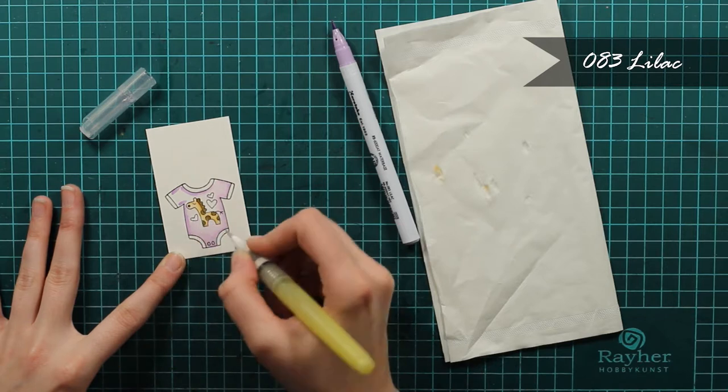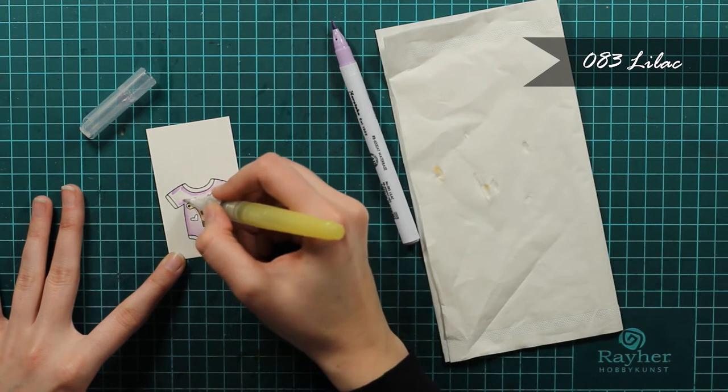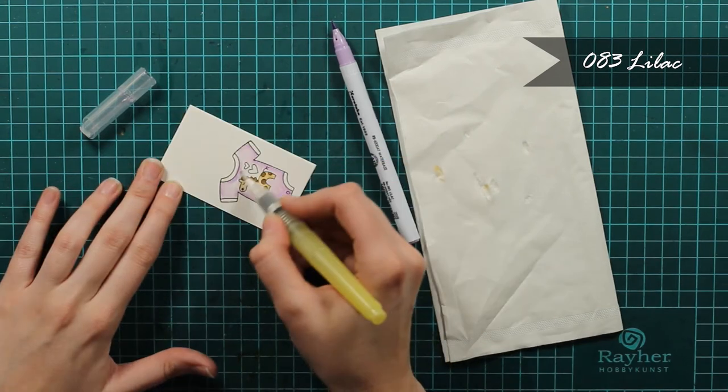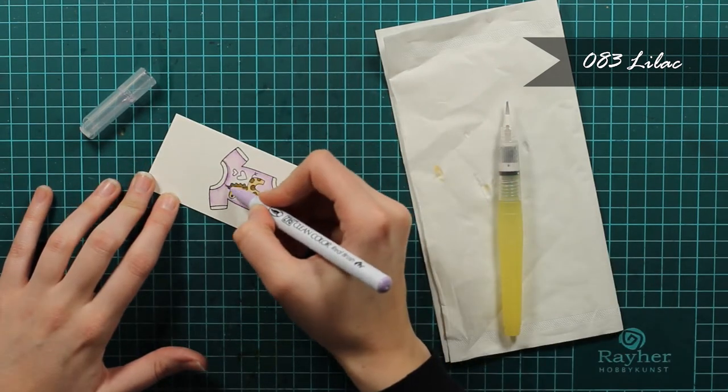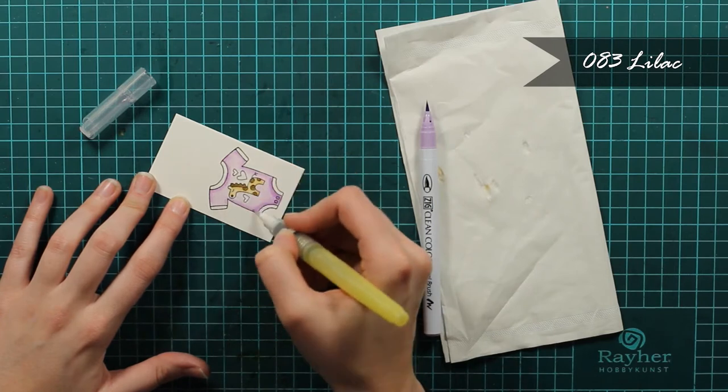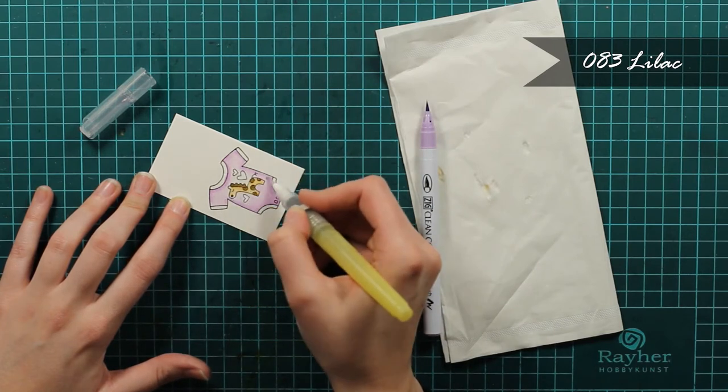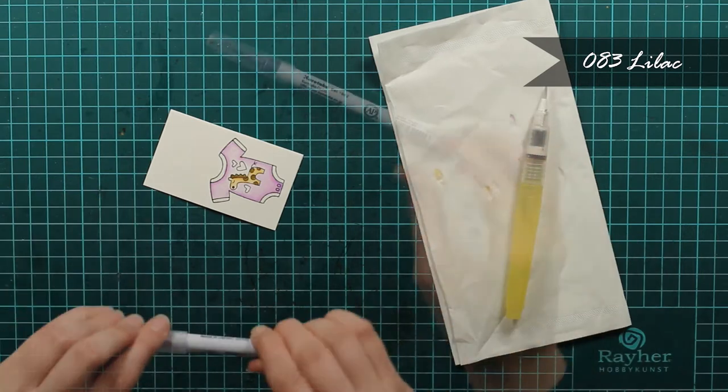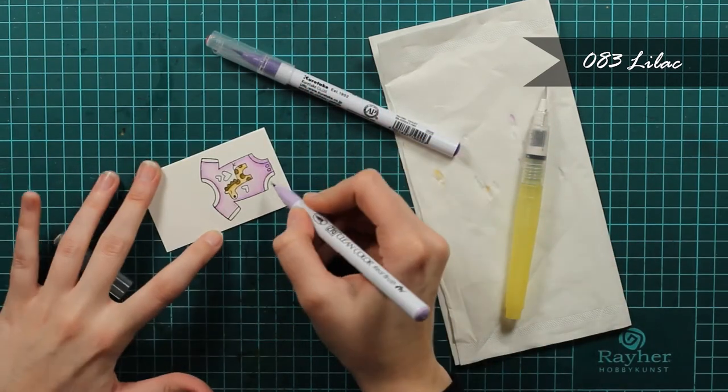I'm using Derwent watercolor paper that is really smooth and works perfect with Zigs, so you will see I won't have problems blending out. The purples are usually colors that don't blend well but as you can see I won't have problems.